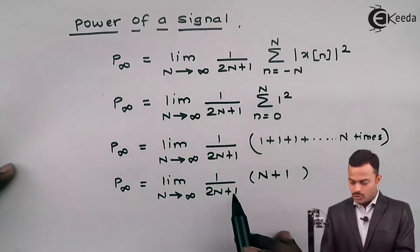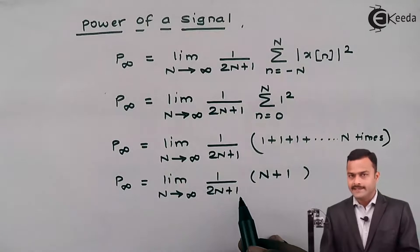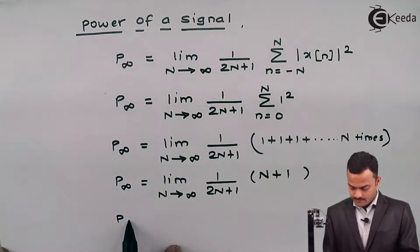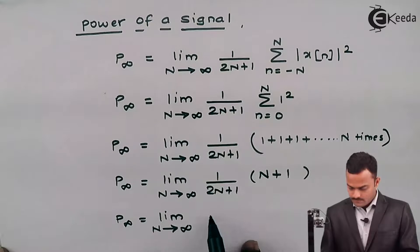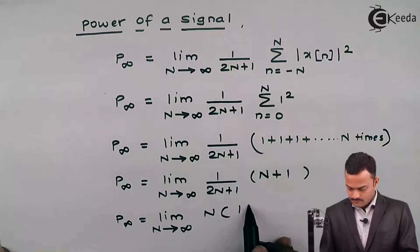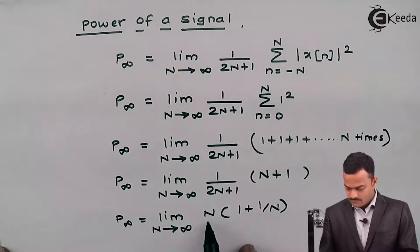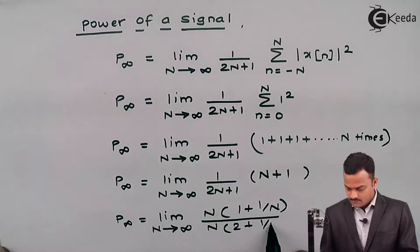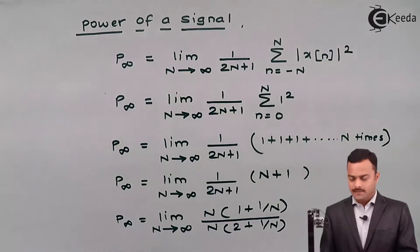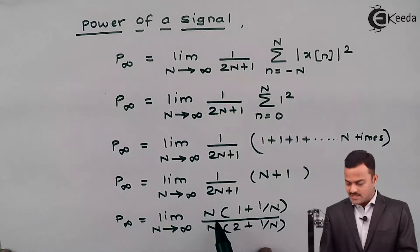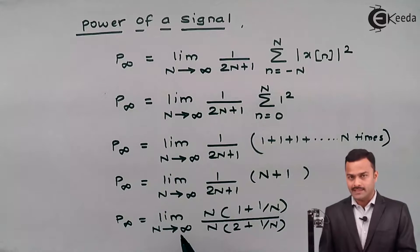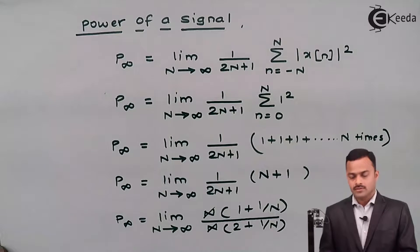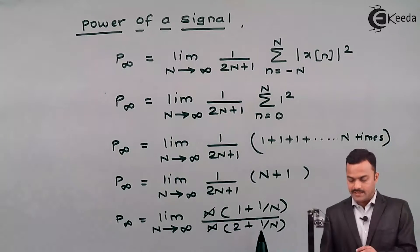To solve this limit, I will take N common from the numerator and denominator. I can cancel N because N tends to infinity means N is not equal to infinity — we can still cancel it. So N gets cancelled.